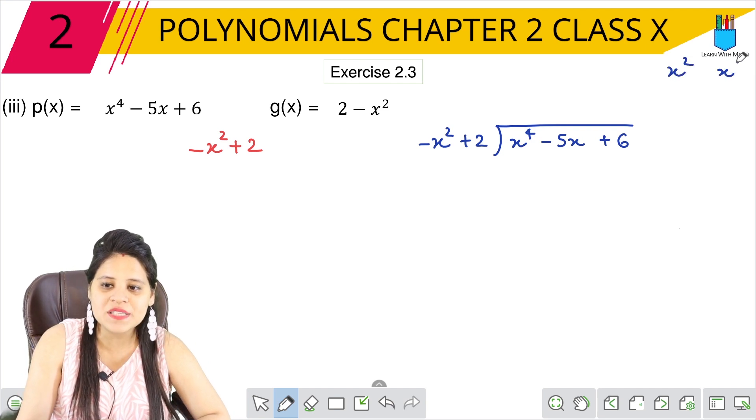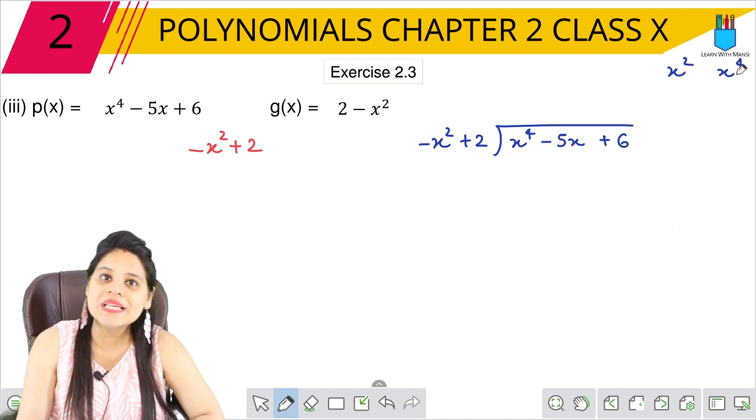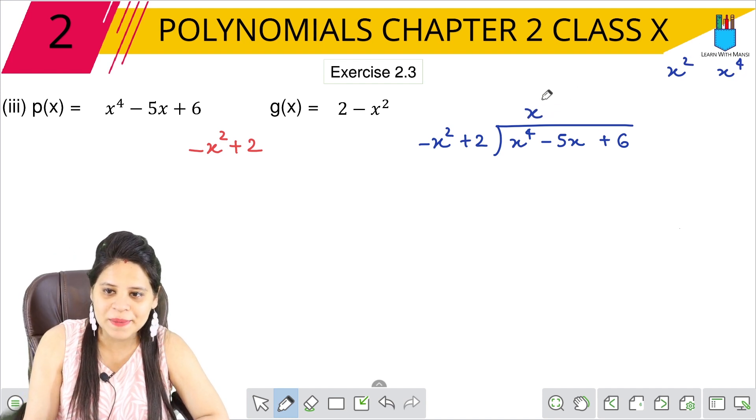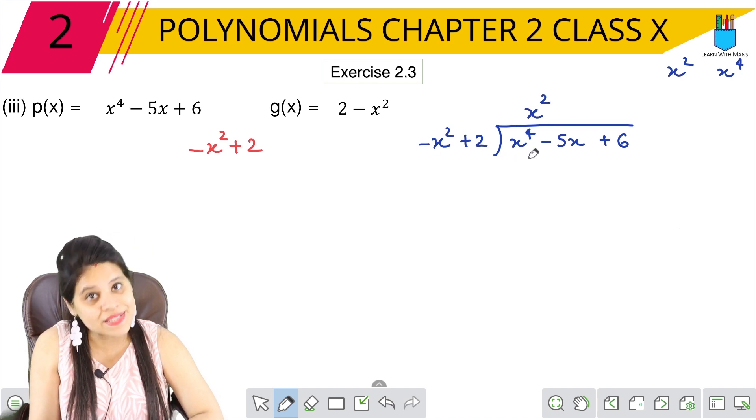Now, x square to x raised to the power of 4. What do we do? We get minus x⁴. So we will multiply it. Minus x square—